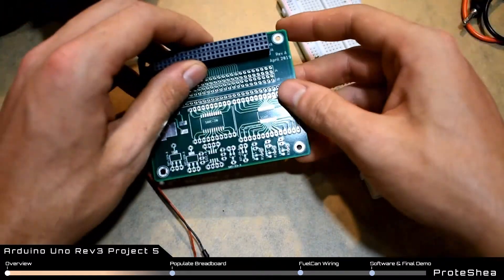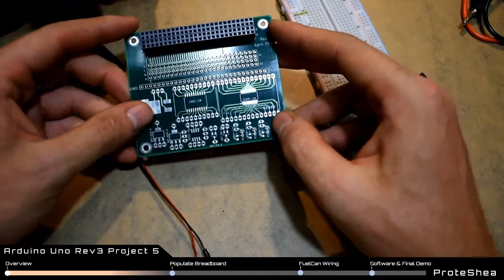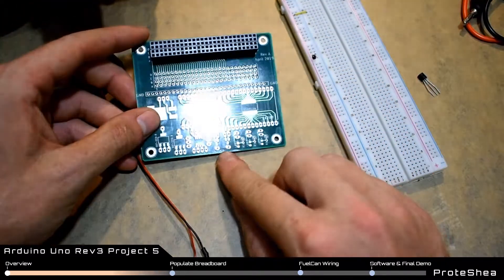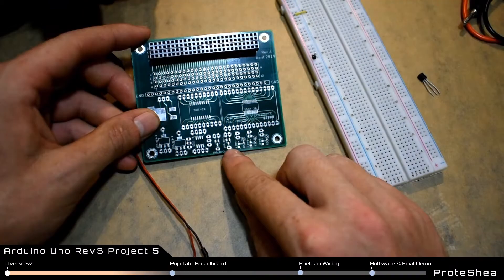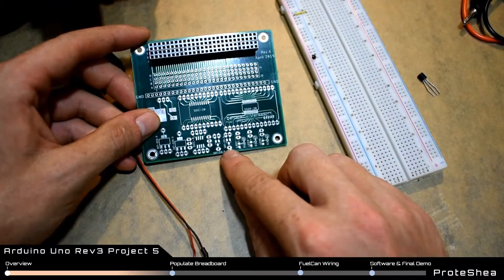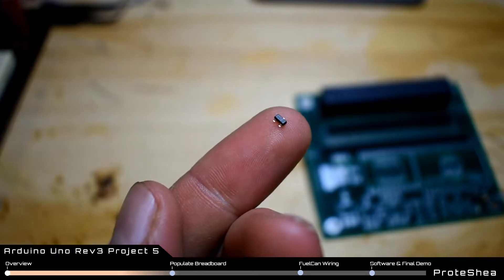Another thing you can do is use the Versa SMT canister with the SOT-23-3 footprint to solder on an N-channel MOSFET.